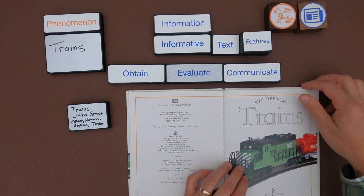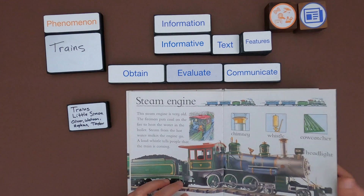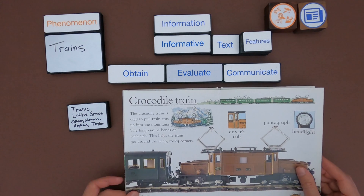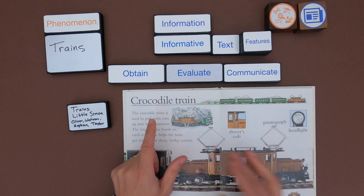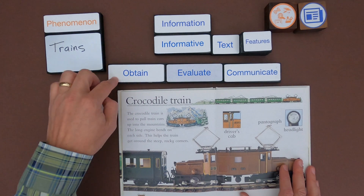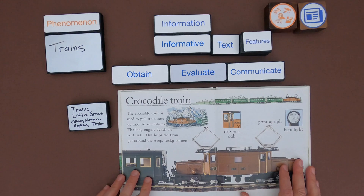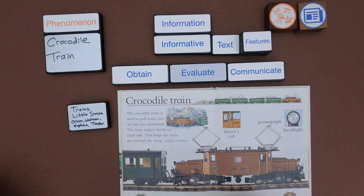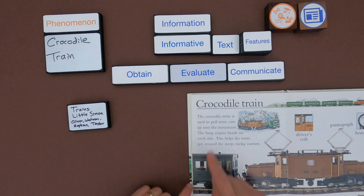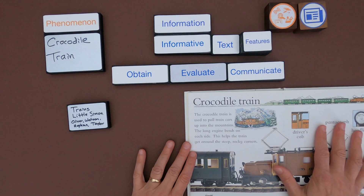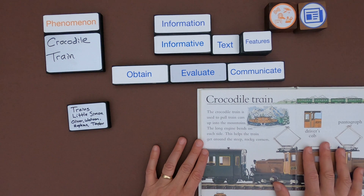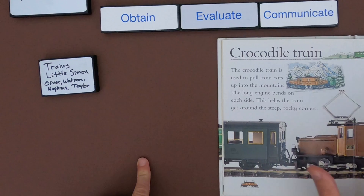The next thing I want to do is look through and see what information I'd like to obtain. I know a little about steam engines and high speed trains, but maybe this is interesting to me — the crocodile train. I don't know what that is, and I want to gather some information from it. So let me change my phenomena. Now I'm going to start taking in information. The text features on this page include a title, illustrations, and a model of a train, so I can gather information from those. I'll write down what I think are some of the more interesting bits of information as I pull them from the text.